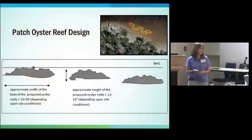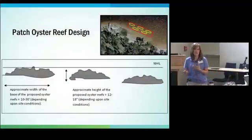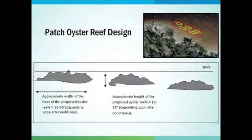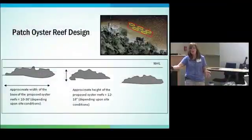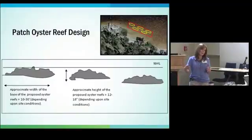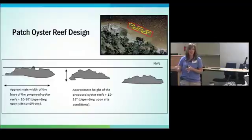Design submissions for major CAMA applications for patch oyster reefs — such as those done at Jones Island — show four or five staggered patch reefs, indicating height and spacing. You can also do one continuous loose layer of oyster shells, but research shows that staggered reefs yield more habitat for fish, crabs, and oysters, even though both provide similar shoreline protection.